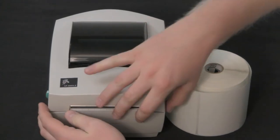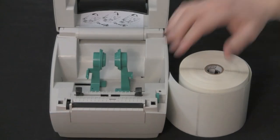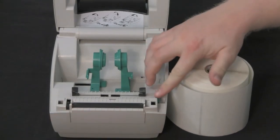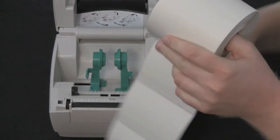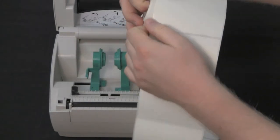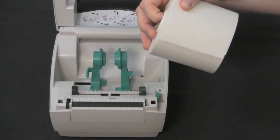Open the media guides. Now take your roll of labels. Remove the outside length of media to remove any dirt or debris that could possibly damage the printhead.